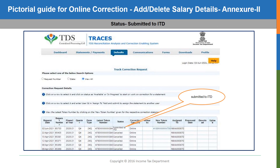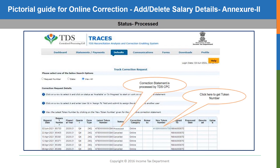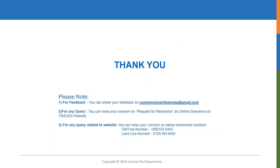You may check the status of your correction request using the track correction request status in the defaults tab. After submission of the correction request, the status will be shown as submitted to TIN. Once the statement is processed, the status will be changed to processed, which indicates that the correction is complete. To get the token number, click on the hyperlink in the field new token number and note this down for future reference. Hope this video was helpful to you. Please give your valuable feedback and suggestions in the email ID displayed on this page, and send us a mail if you want us to include any other relevant topics in this e-learning program. Thank you so much.